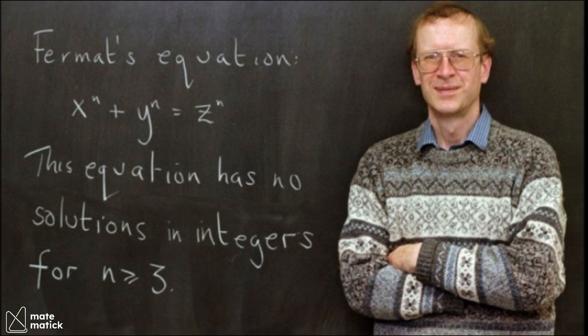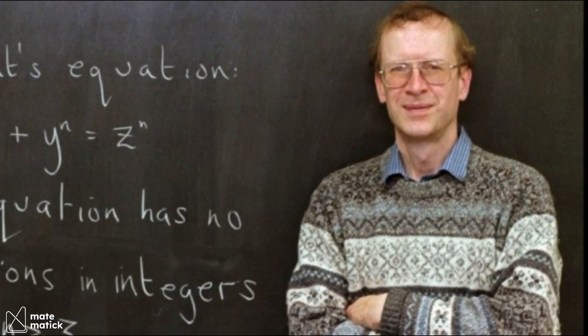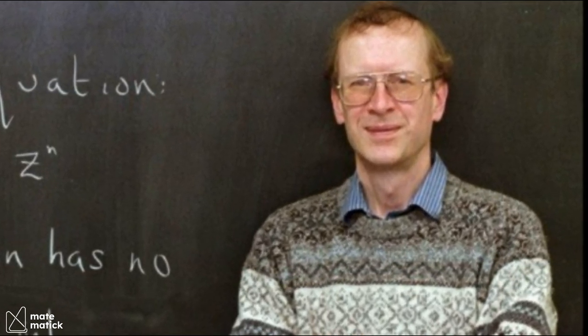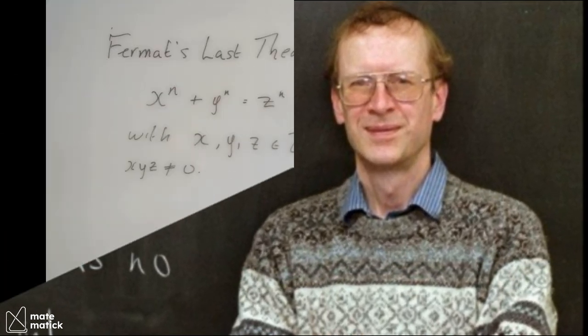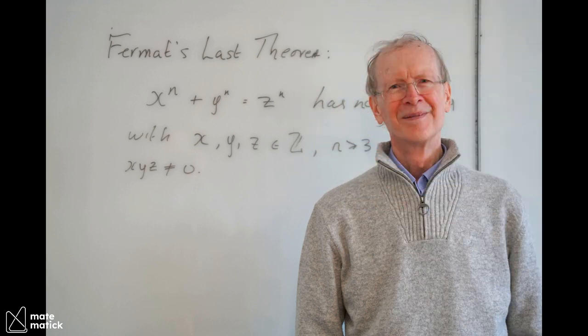His proof involved complex mathematical concepts from various fields, including modular forms, elliptic curves, and algebraic geometry. Wiles' proof finally resolved the centuries-old mystery, confirming that Fermat's claim was indeed true.